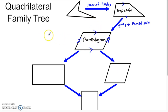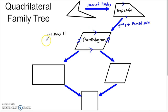For a parallelogram, the most obvious property is that the opposite sides are parallel — this is the definition of a parallelogram. It's a quadrilateral where both pairs of opposite sides are parallel. It's also true that the opposite sides are congruent, and we'll prove this in a little bit. Anytime you have a parallelogram, the opposite sides will necessarily be congruent.